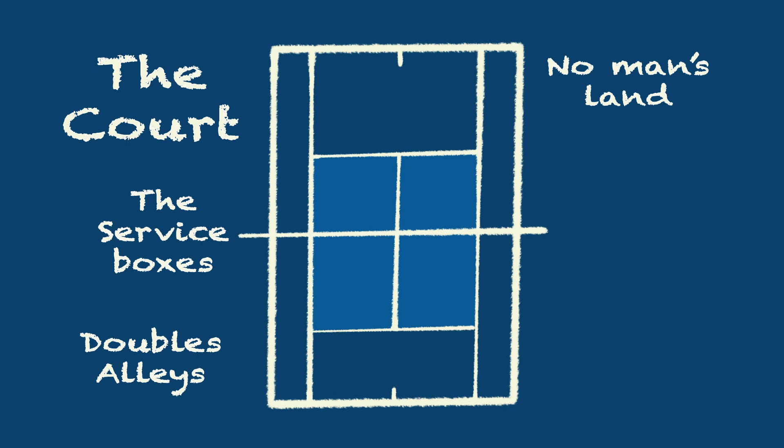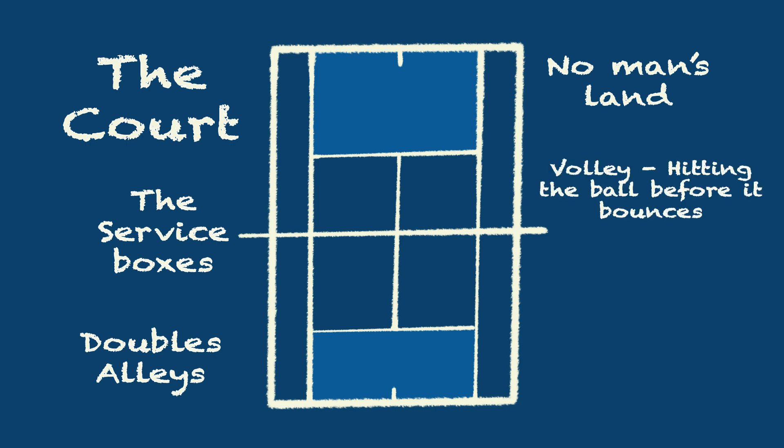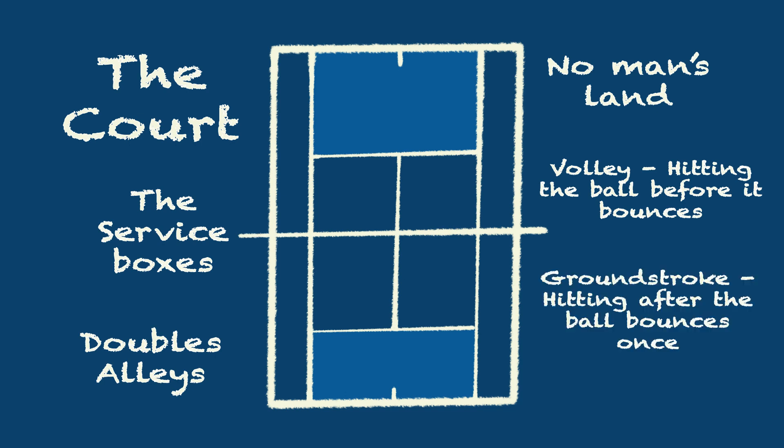The service boxes are where you must aim when serving. No man's land is the area between the service line and the baseline. It is referred to as no man's land because when you are in it, it is difficult to return the ball since you are too far back to volley at the net, and too far forward to hit a ground stroke.